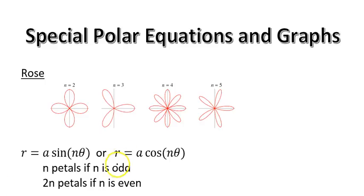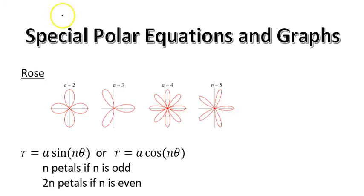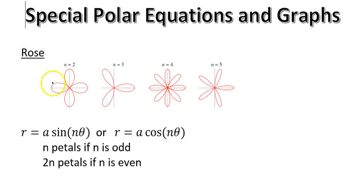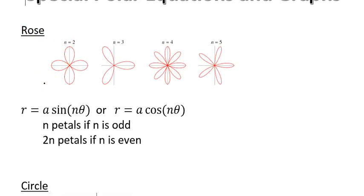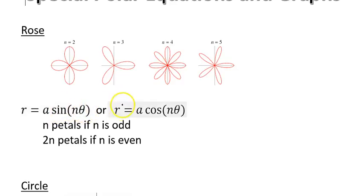This lesson is on special polar equations and graphs. We've been working with polar coordinates and looking at different kinds of equations. We looked at some basic graphs, but these are ones that are a little more complicated and interesting. The first one we're going to look at is a rose. It gets its name because they kind of look like flowers. The equation looks like r equals some number times the sine of some number times theta, or r equals some number times the cosine of another number times theta.